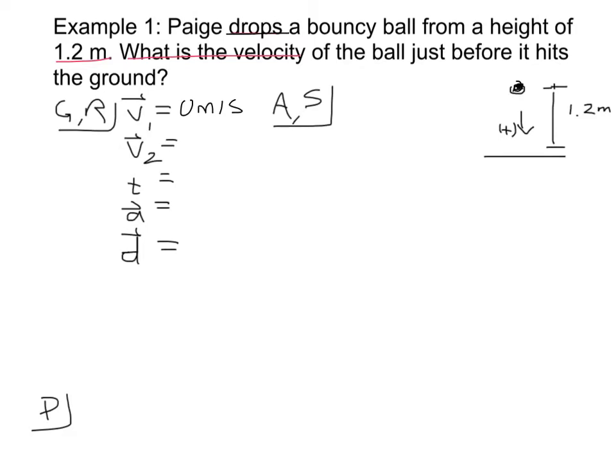You see I've drawn a diagram over here as well. So here's the ball, and I've defined downwards as positive. So its direction of motion is positive. It goes down 1.2 meters, and V2 is what I'm looking for.